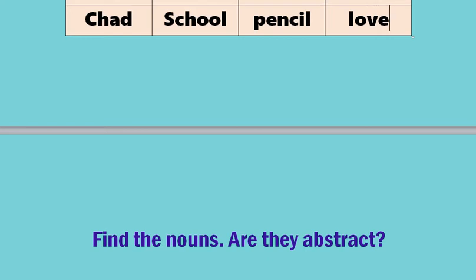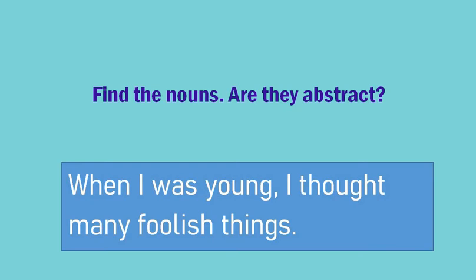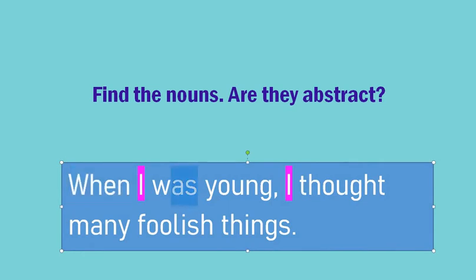So we're going to find the nouns and find out: are these abstract nouns? Take a look at this sentence: 'When I was young, I thought many foolish things.' Where are the nouns? Sometimes the noun is a pronoun — 'I' is going to be the subject; this sentence is about I. 'When' is telling us when it happened; 'was' is going to be our state of being verb; 'thought' is an action verb; 'many' and 'foolish' are adjectives describing things. And 'things' is another noun here.